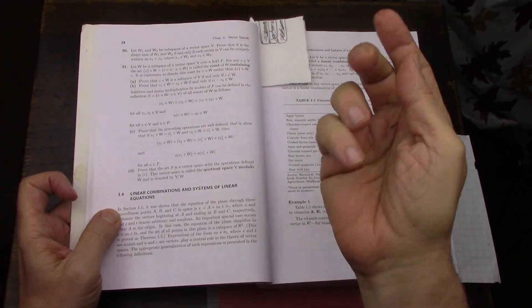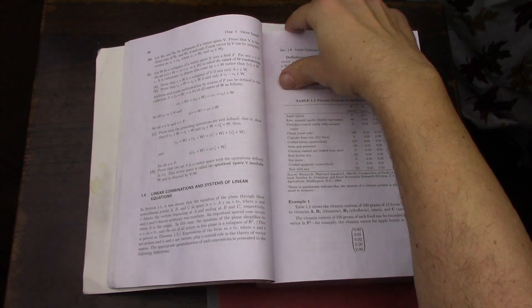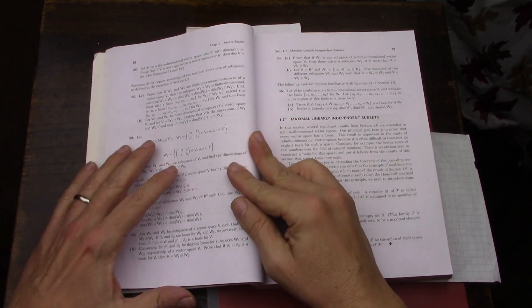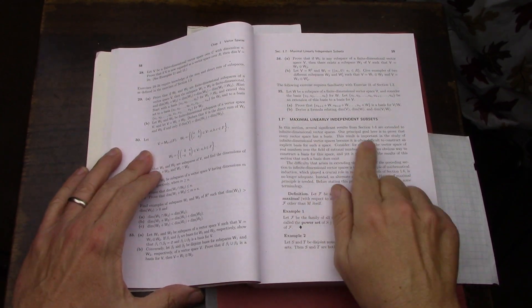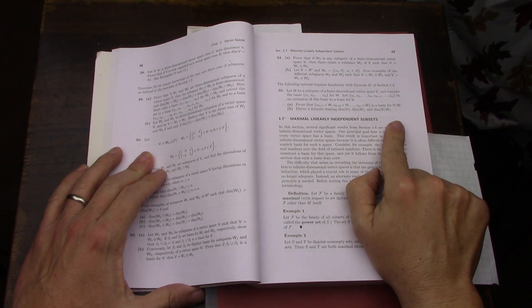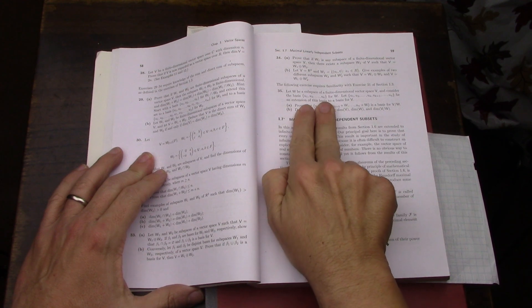Then later on in the book, and I'm not going to go through the problems, I'm just mentioning where they are, there is also a problem in section 1.735 which has to do with quotient spaces.